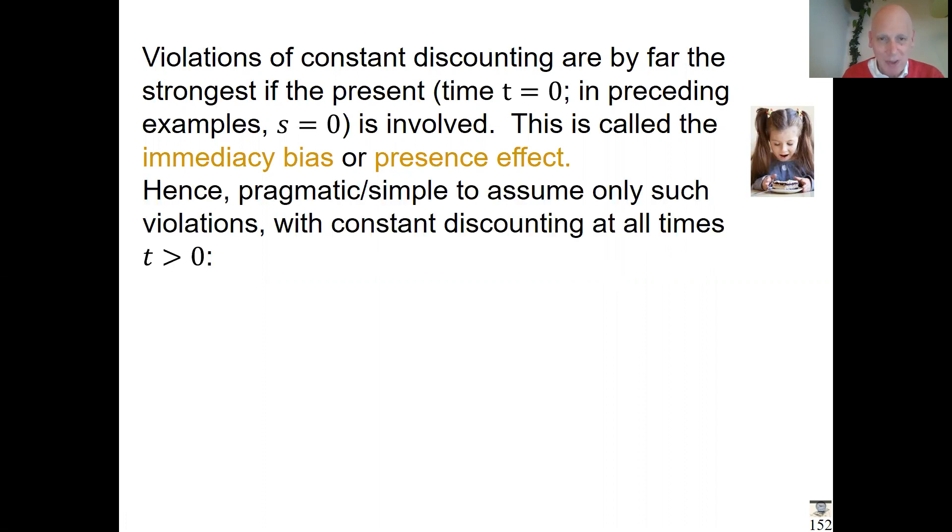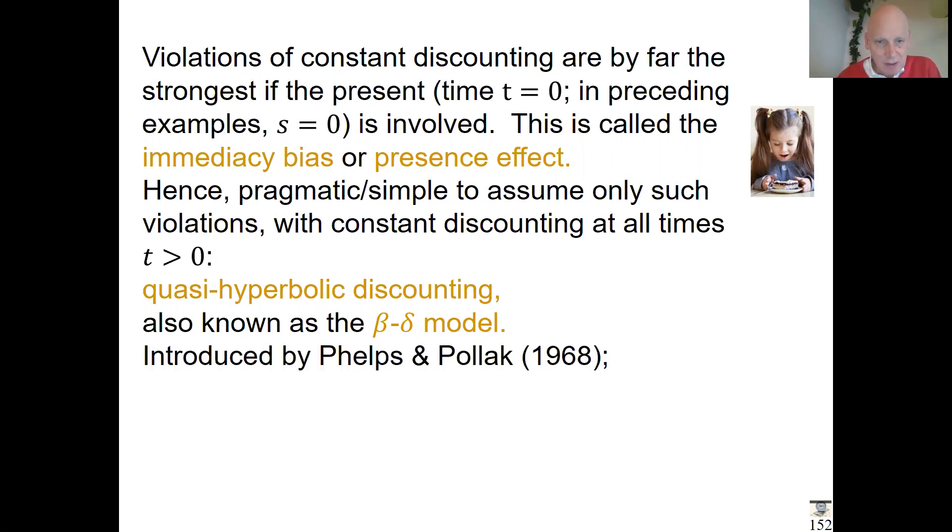The idea of quasi-hyperbolic discounting is that this is the main, strongest phenomenon. Let us capture that and maybe nothing else—you have the most important thing, but other than that, keep things as simple as possible. That's what they try to do: only capture the presence effect and nothing else. This is the quasi-hyperbolic discount model, also called the beta-delta model, introduced by these people and popularized by Laibson.